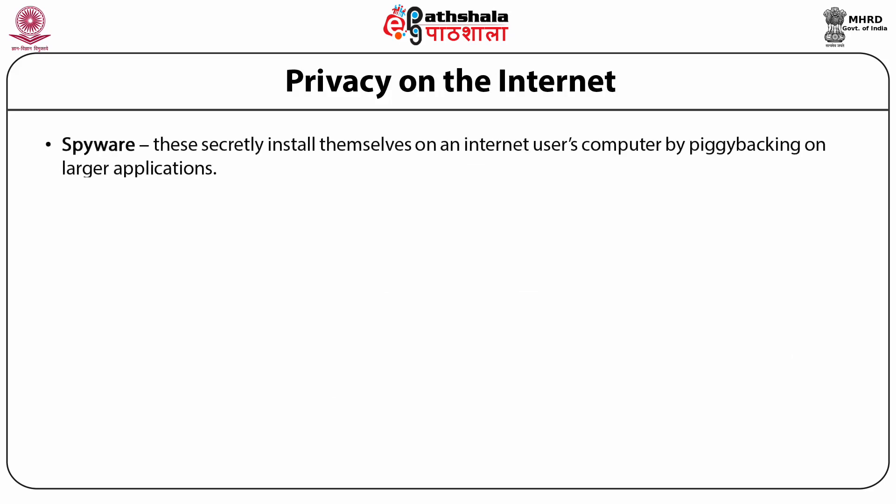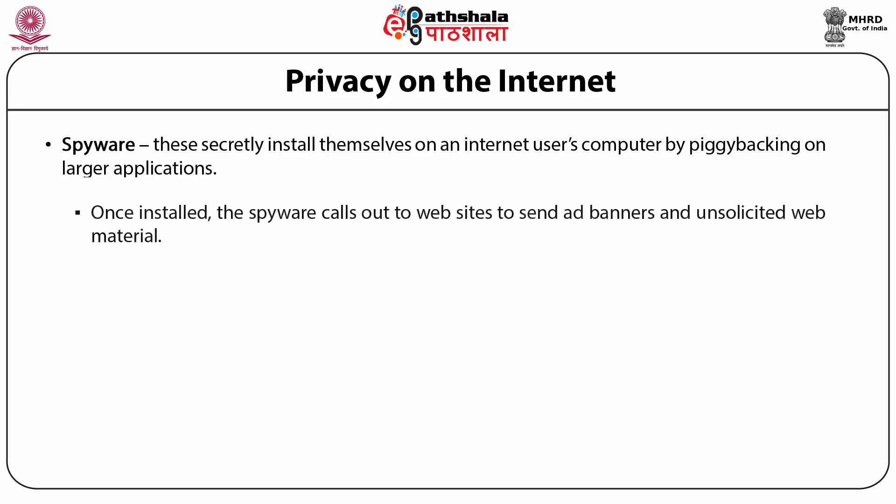Spyware secretly installs itself on an internet user's computer by piggybacking on larger applications. Once installed, the spyware calls out to websites to send ad banners and unsolicited web material, and also reports users' movements on the internet to other computers.